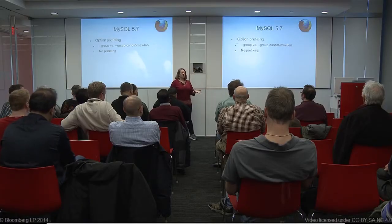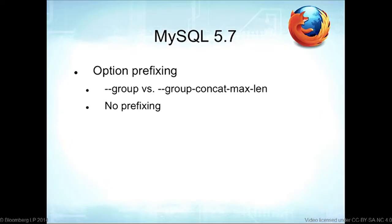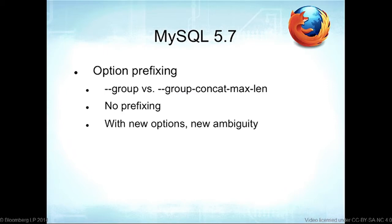They removed prefix matching because it's too confusing — if you abbreviate 'group' and they later add a 'group_commit' option, the word 'group' becomes ambiguous. MySQL 5.7 isn't GA yet, so it'll be a while before you're using it, but the rule is you have to type out the whole option name. That's just a good habit to get into anyway.